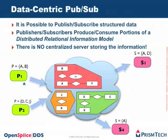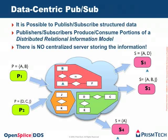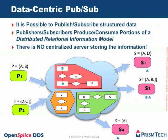P1 produces a new value for A, which is distributed to the interested parties. Then it produces a new value of B, and as there are no interested parties, this value will be stored in the global data space. Then S2 arrives, interested in receiving updates of A, B and J. At this point the middleware will automatically deliver the updates of B and A — this is already an example of time decoupling, as S2 is receiving data that was produced before the system knew about its interest.